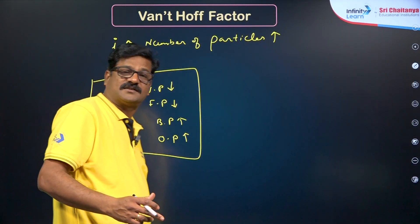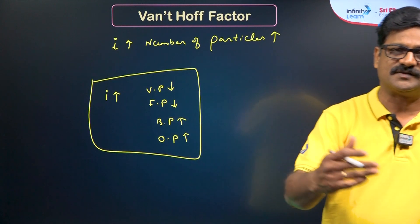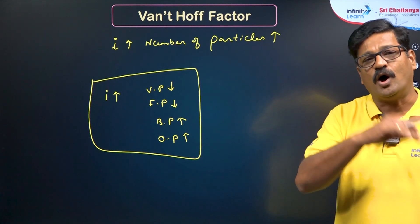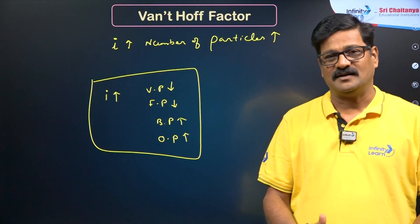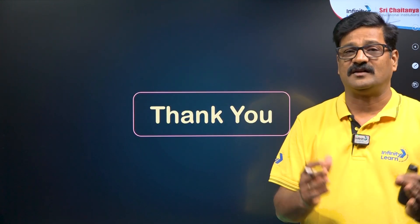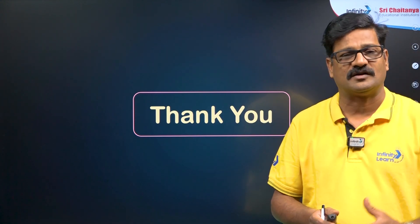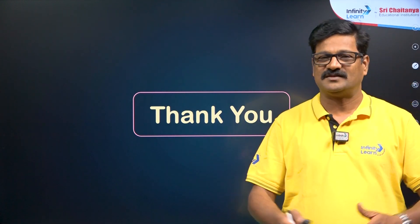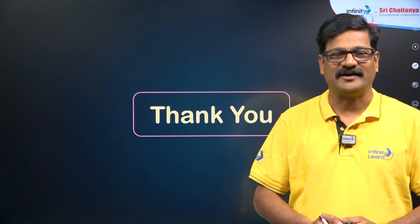In today's class, we discussed the Van't Hoff factor — what it is, how it is calculated for association or dissociation, and how to find the degree of association and dissociation. Common question types based on the Van't Hoff factor include ordering boiling points, freezing points, osmotic pressure, and vapour pressure. Stay tuned for short videos where a simple concept is taken and rigorously discussed for the NEET examination. Please share these videos with your friends, like this session, and subscribe to the Infinity Learn NEET YouTube channel. Thank you very much.